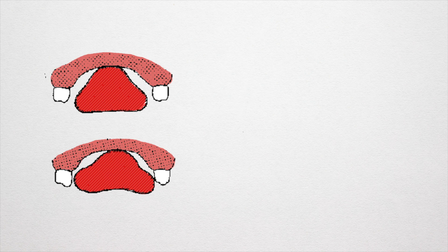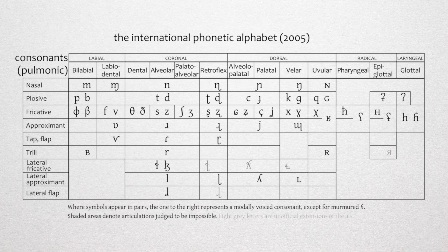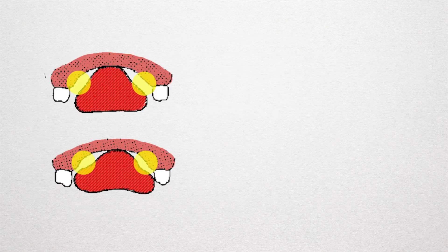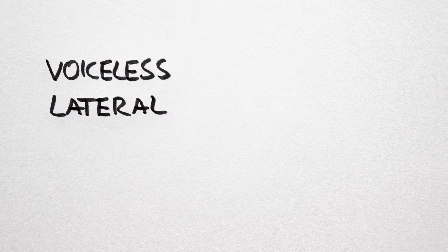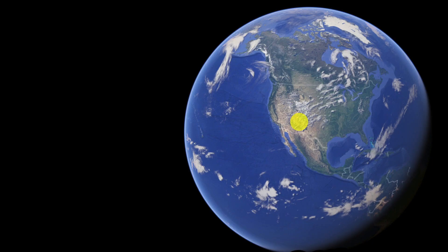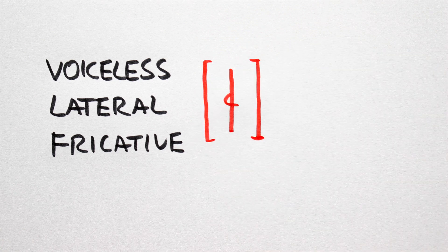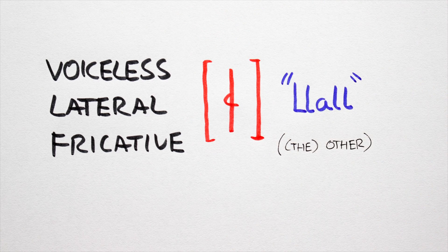And finally, number 7: Laterals. Laterals are liquidy L-type sounds, produced when the tongue creates an obstruction in the middle of the mouth and reroutes the air out the sides. Laterals come in three forms: lateral fricatives, lateral approximants, and lateral flaps. We have only one lateral sound in English — 'la' as in laugh. That said, we can't talk about laterals without mentioning the voiceless lateral fricative, found in Icelandic, Welsh, and Navajo, amongst others — as in the Welsh pronoun 'lla', which is just the coolest sounding word.